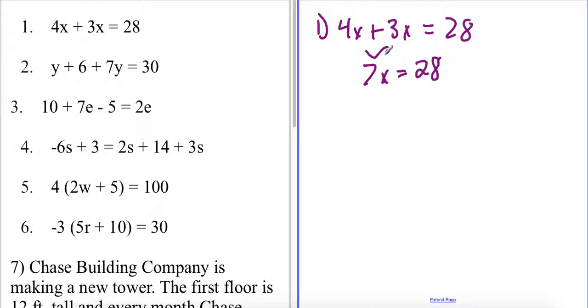Now that I have my coefficients on one side and my constants on another, or as you guys know it the bags on one side and the coins on another side, we're going to divide by 7 so I can see that my variable x is equal to 4.